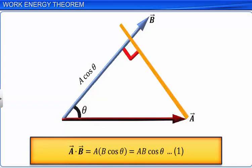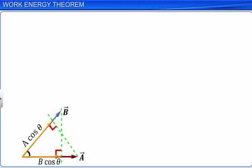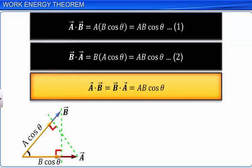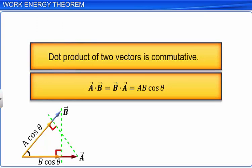Similarly, A cosθ is the projection of vector A on vector B. So the dot product of vectors A and B can be written as B into A cosθ, which equals AB cosθ. Let this be equation 2. From equations 1 and 2, we see that A dot B is equal to B dot A, which equals AB cosθ. Thus, the dot product of two vectors is commutative.